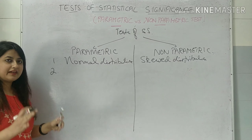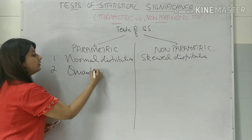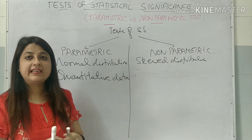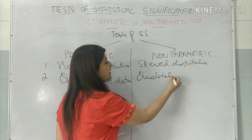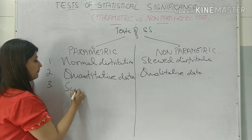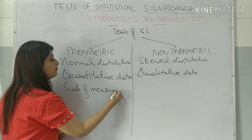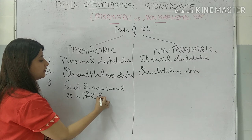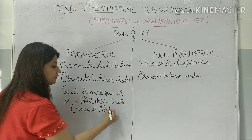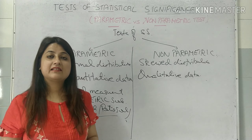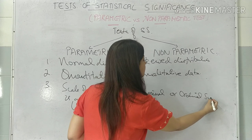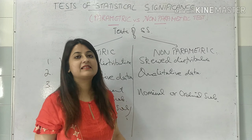The second difference is that parametric tests are applied for quantitative data, while non-parametric tests will be applied when your data is qualitative. The third difference is that a parametric test is applied when the scale of measurement is a metric scale — that means it's an interval or ratio scale. A non-parametric test is applied when we have a nominal or ordinal scale, that is, when the data is measured using an ordinal or nominal scale.